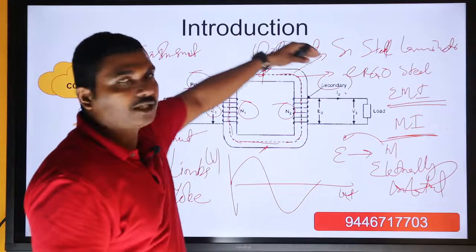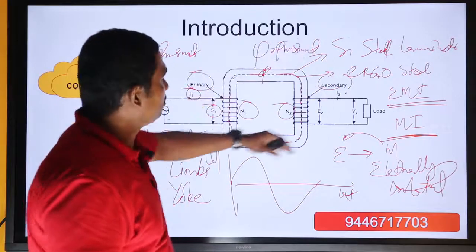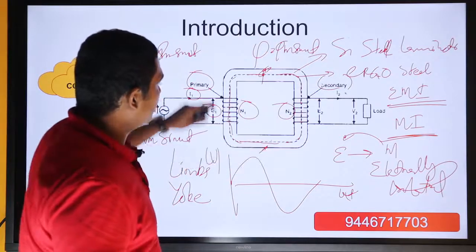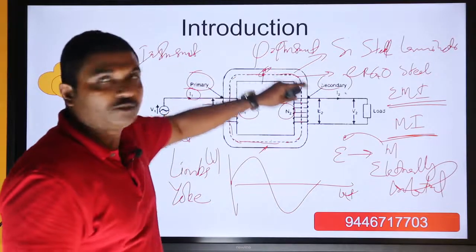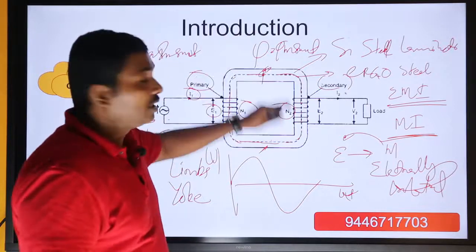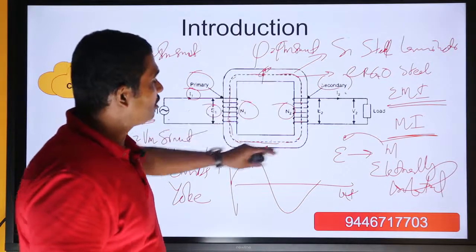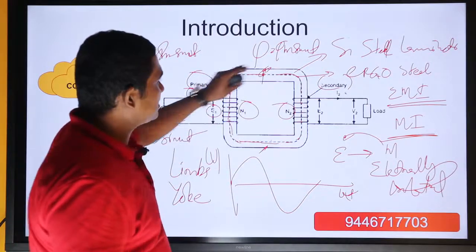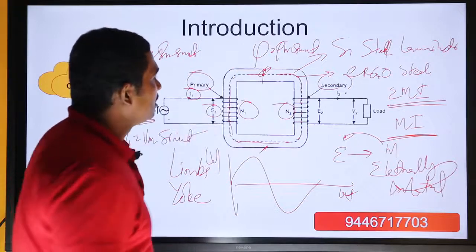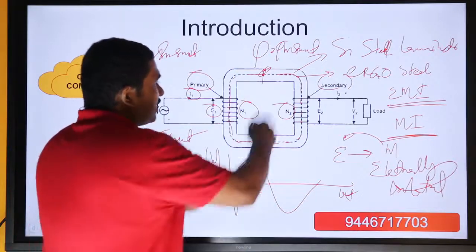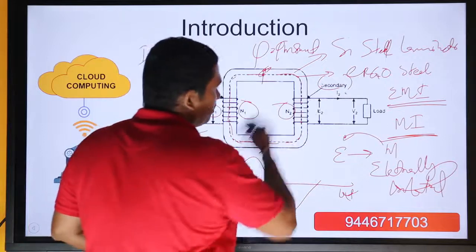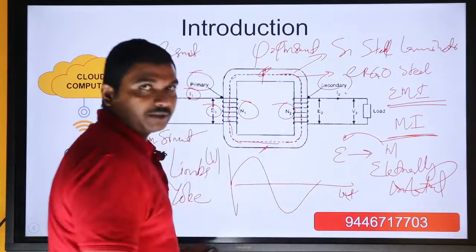Φ is equal to Φm sin(ωt). This flux creates a closed path through the magnetic core and links with the secondary winding having N2 number of turns.